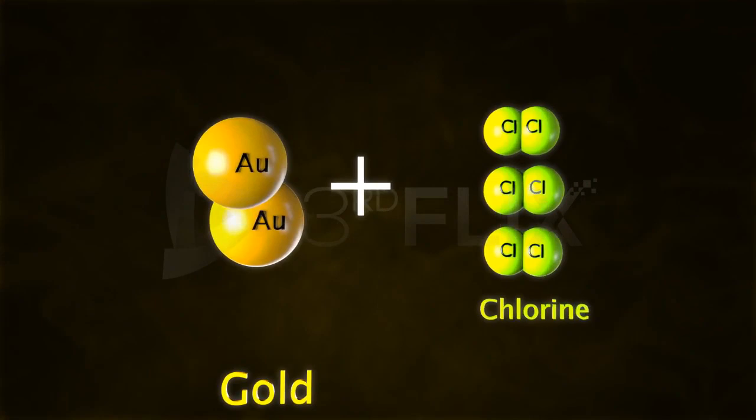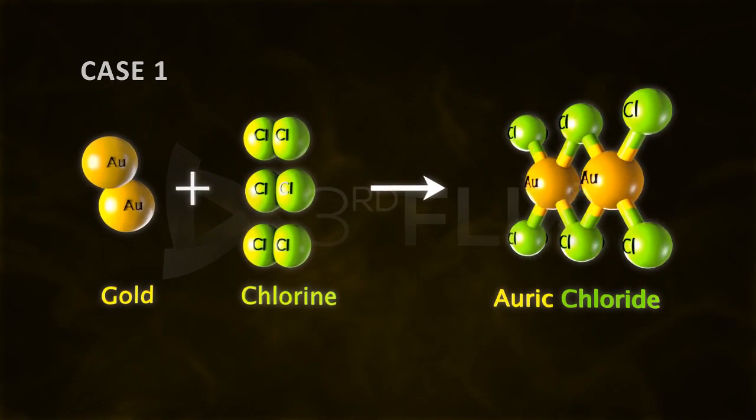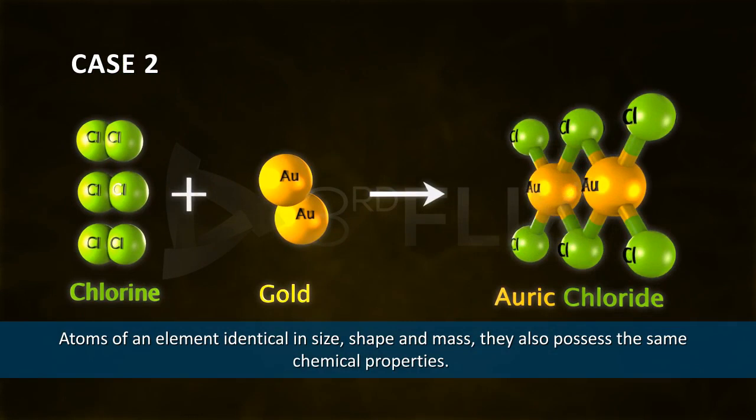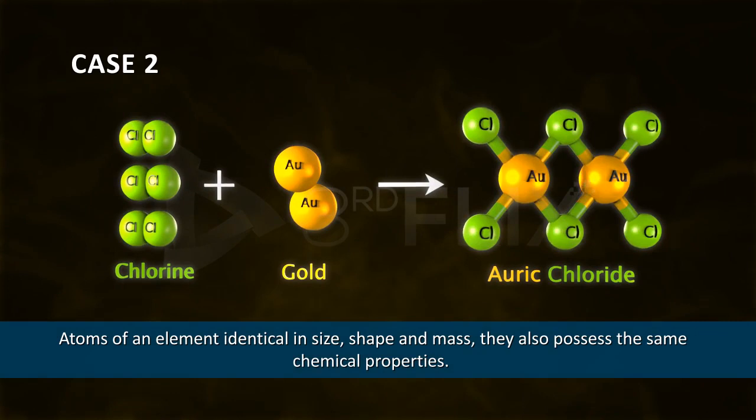Let's observe how atoms of gold react with atoms of another element, say chlorine. The atoms of gold react with the atoms of chlorine and they all form the same compound, auric chloride. So Dalton, in his theory, proposed that not only are atoms of an element identical in size, shape, and mass, they also possess the same chemical properties.